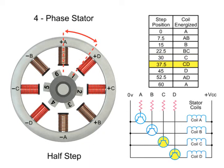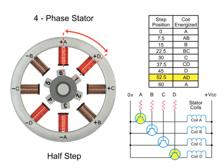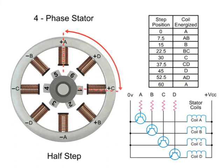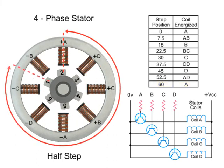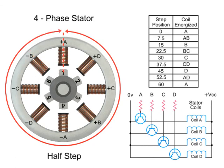Switching coils in this combination will rotate in the reverse direction. As you can see in this example, 48 steps are required to make a full rotation at 7.5-degree increments.